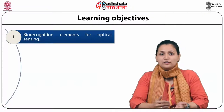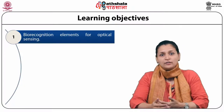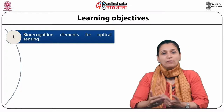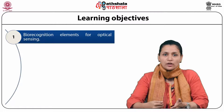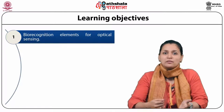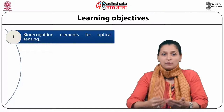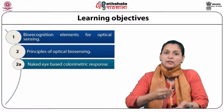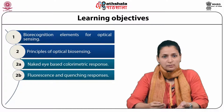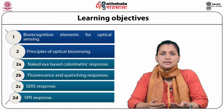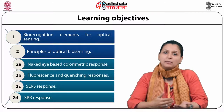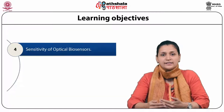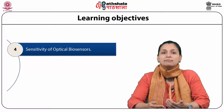This module has been designed with the following objectives. Initially we will understand about the biorecognition elements for optical sensing. A biosensor essentially comprises of a biological recognition element with a transducer. In this module we will particularly talk about transducers but will also introduce ourselves with two specific biological recognition elements: antibodies and aptamers. Thereafter this will be followed by understanding the principles of optical biosensing, ranging from simple spectroscopic naked eye detection to fluorescence and quenching responses, SERS responses, and SPR responses. SERS is surface enhanced Raman spectra techniques and SPR is surface plasmonic resonance techniques. We will understand how these techniques enhance the sensitivity of optical biosensors through certain specific examples.